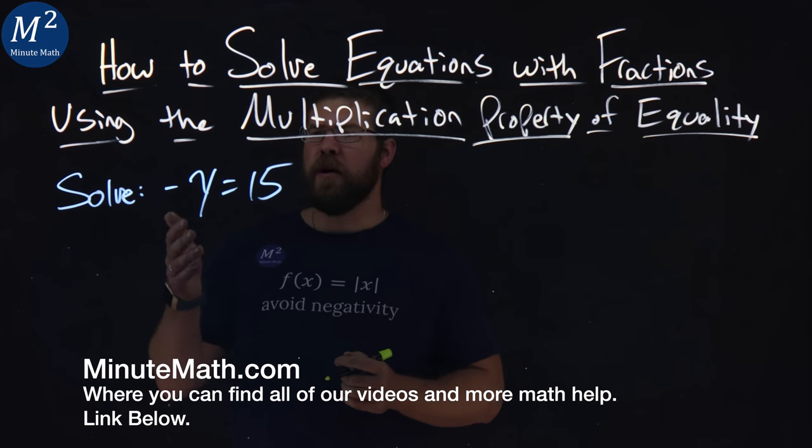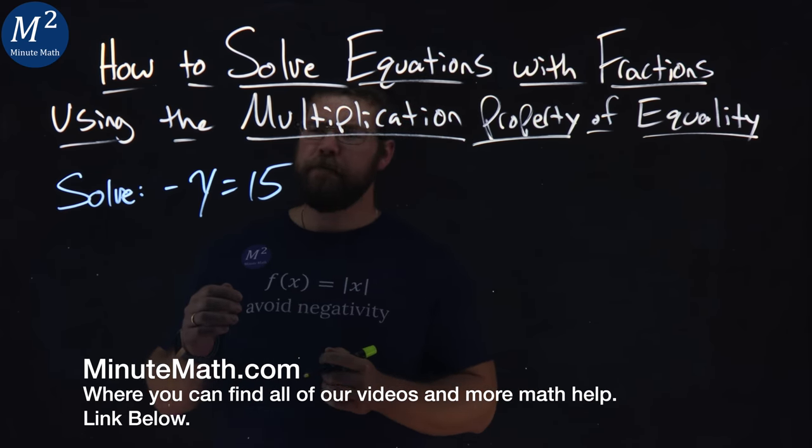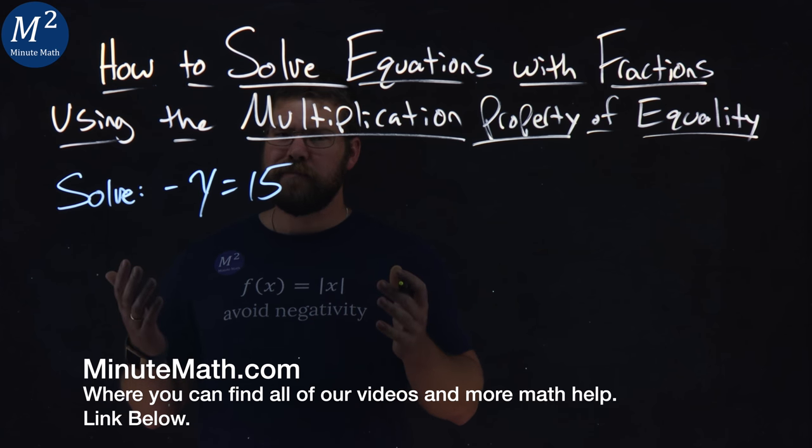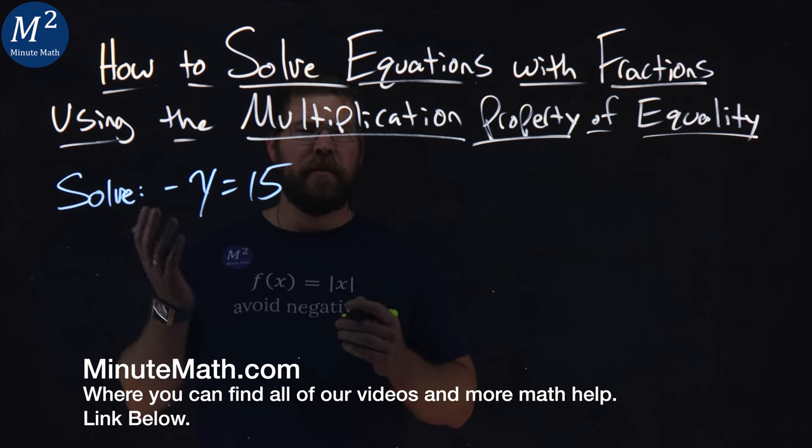We're given this problem right here. Solve negative y equals 15, and well, kind of looks pretty simple. Y is basically by itself.